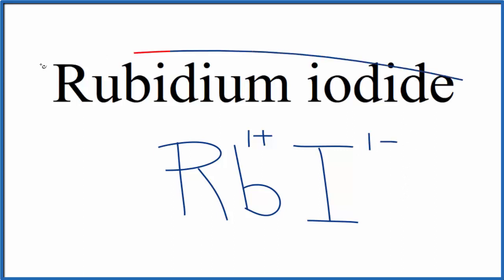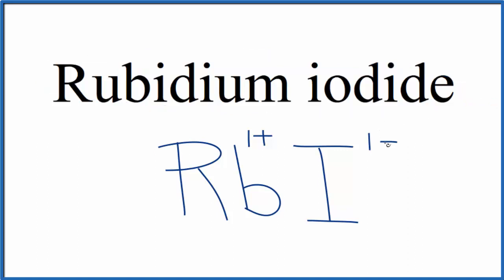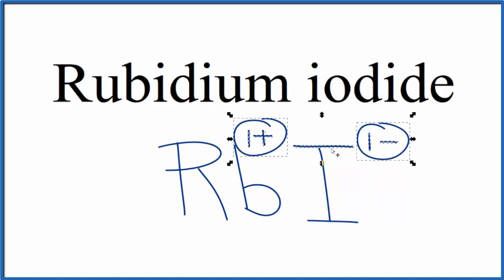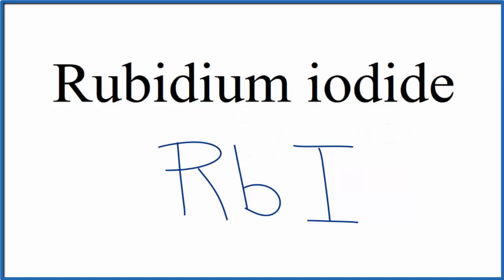Since rubidium iodide is a neutral compound — it doesn't say ion after it — these charges need to add up to zero. So 1+ and 1− adds up to zero, giving us a net charge of zero. So RbI is the formula for rubidium iodide.